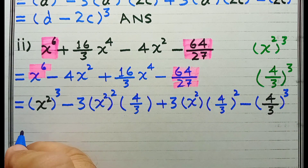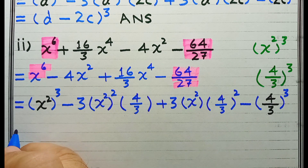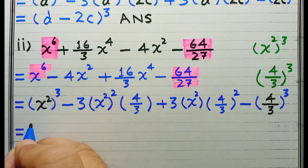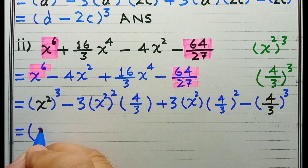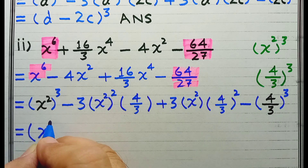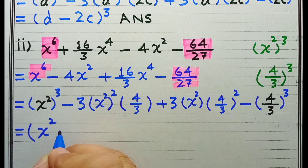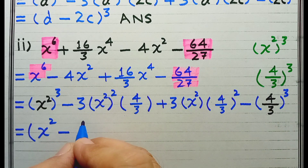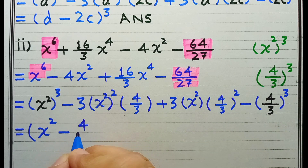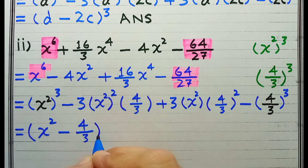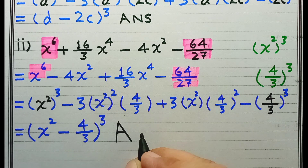This is a and this is b. Here we have a, here we have b. So a has x squared and b has 4 upon 3. A is x squared and b is 4 upon 3. Now let's go for the second and the final step: a minus b, whole cube. This is the required answer.